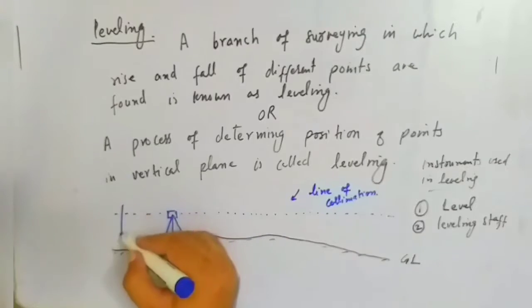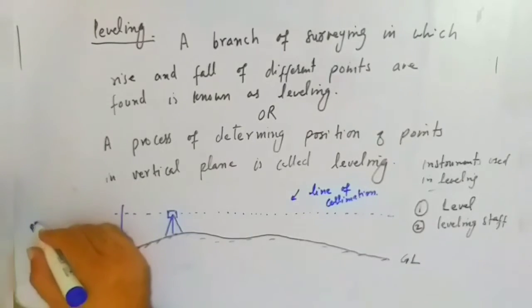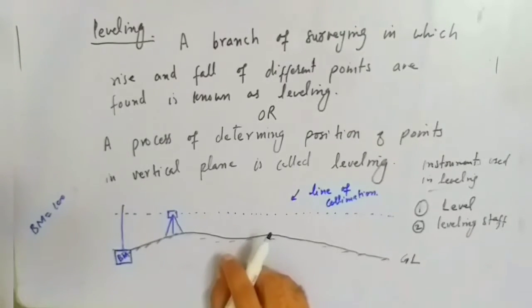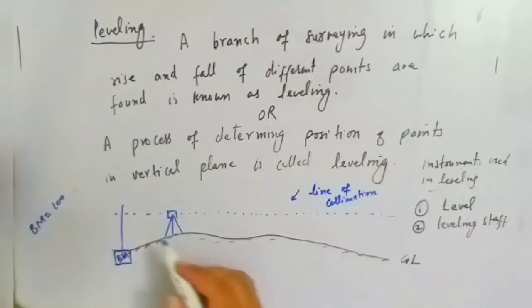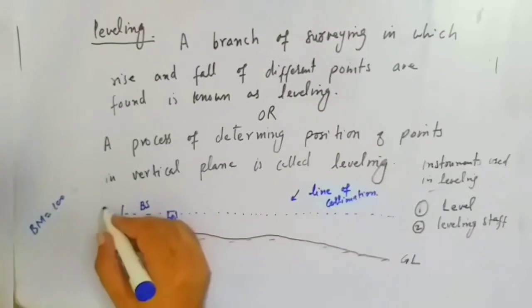So here you will start leveling staff and this point will be called a benchmark. For example, benchmark is 100 meters. The first point taken on the level is called backsight. For example, this is 2.5 meters.